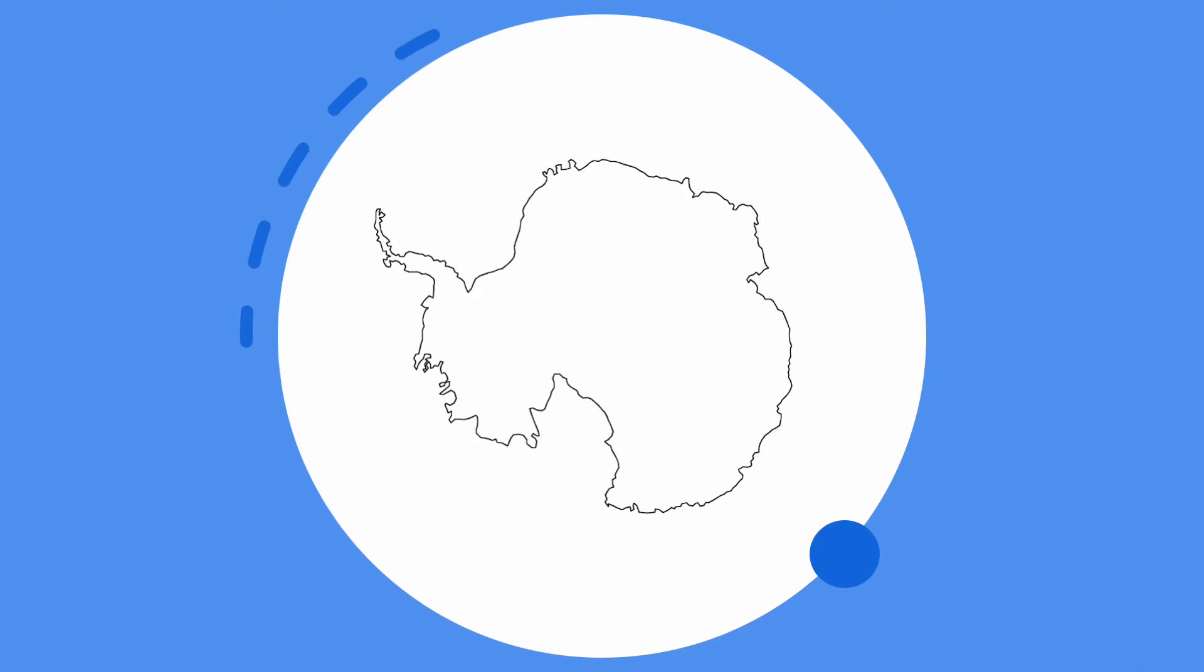This is Antarctica. It's the southernmost continent on Earth. It's nearly twice the size of Australia, yet only 1,000 people live there over winter. That's probably because it's super cold.